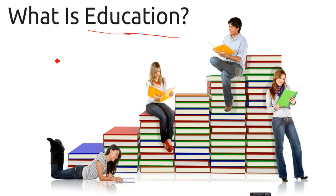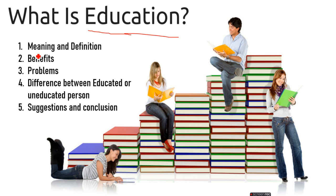Here are some rules and regulations that you have to follow. The first point is content — content means what exactly you are going to cover in the whole presentation. You need to tell the audience upfront what the benefit is going to be. You should show some image about what the presentation is all about and what unique benefit you are giving. This is all about education, so I'm going to cover the meaning and definition of education, benefits, problems, and the difference between an educated and an uneducated person, and at last, suggestions and conclusion.